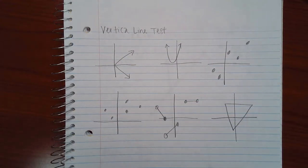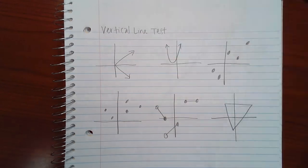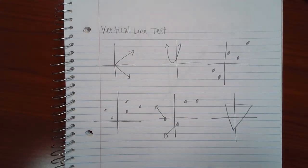This topic is the vertical line test. This is a test that's used to determine whether or not a graph or a relation is a function. The vertical line test is you imagine or draw many vertical lines. If any single vertical line touches the graph more than one time, then it's automatically not a function.